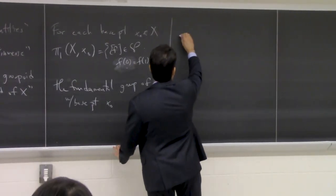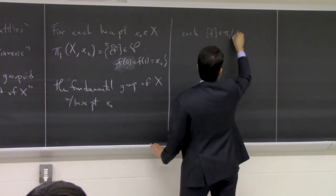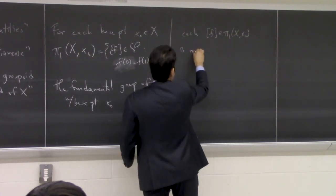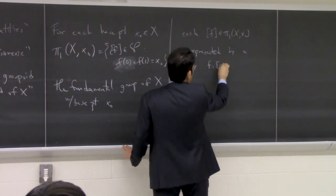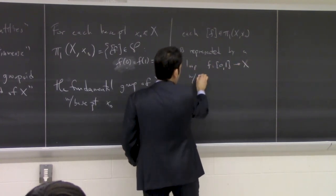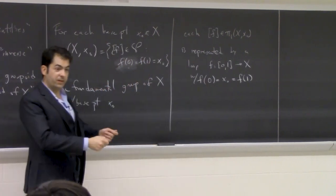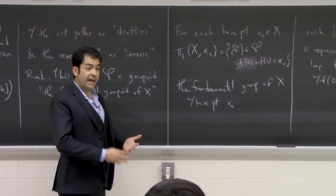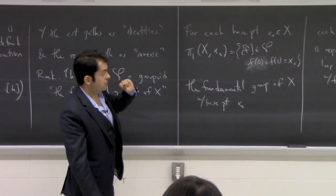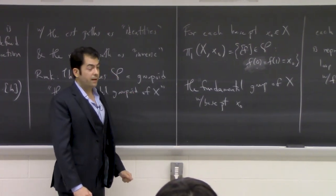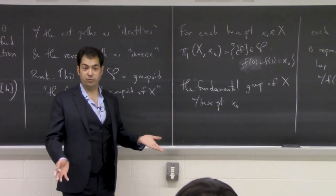So just to emphasize, each class in here is represented by a loop, which we think of as being defined on the interval, but just having the endpoints fixed at a given point. Different representatives are connected continuously keeping this condition fixed. The notation π₁ is used because there is a whole family of homotopy groups of a space.